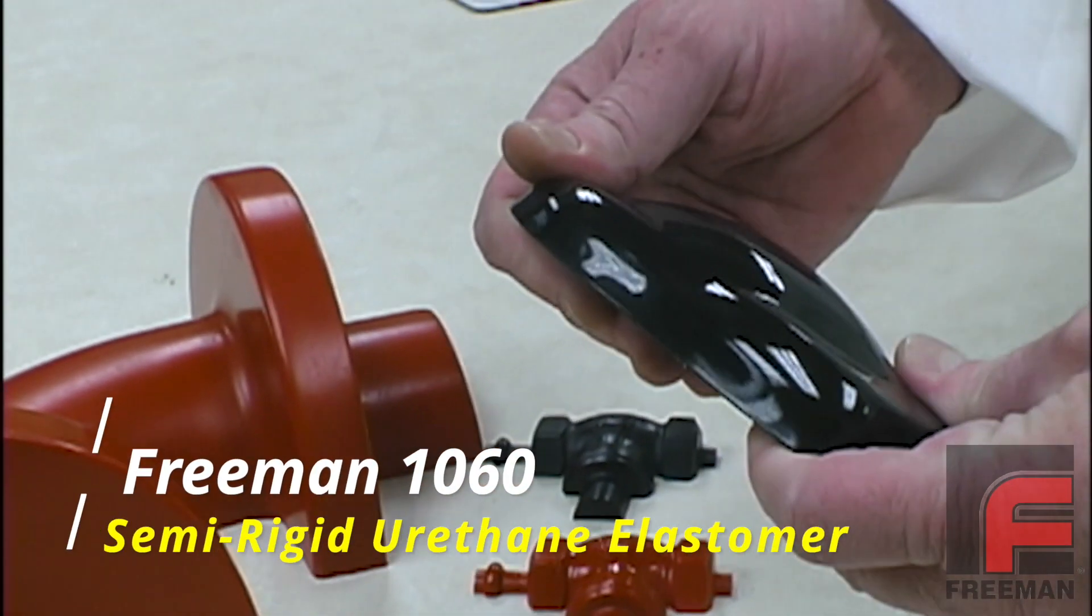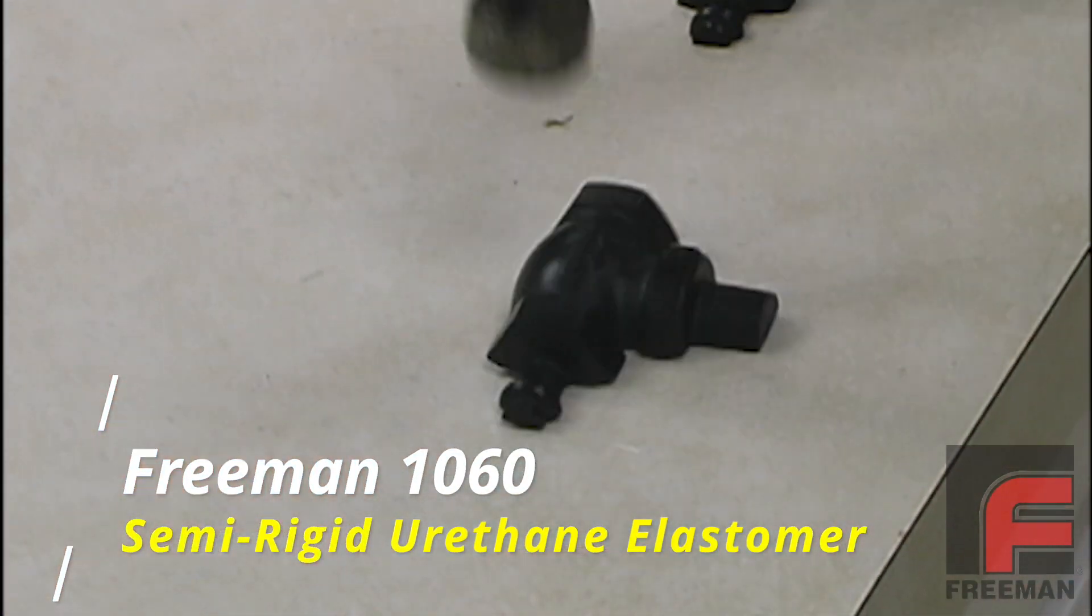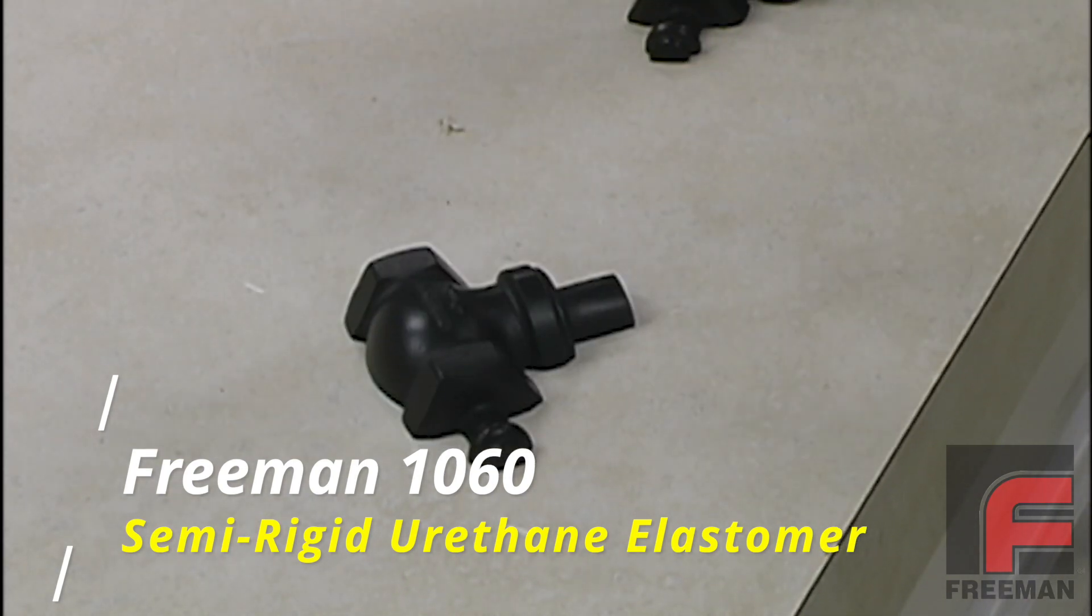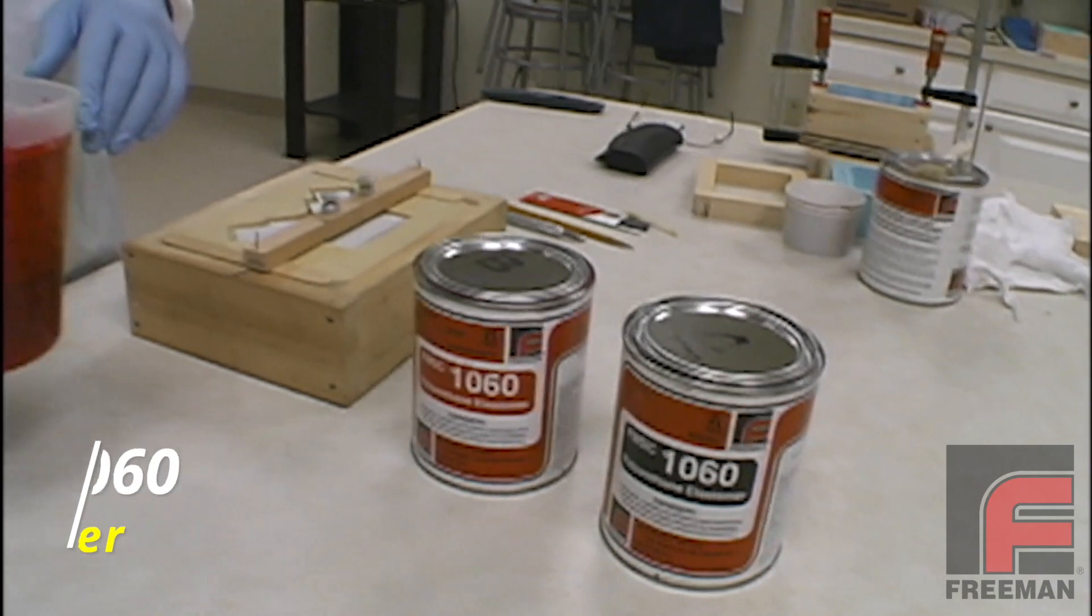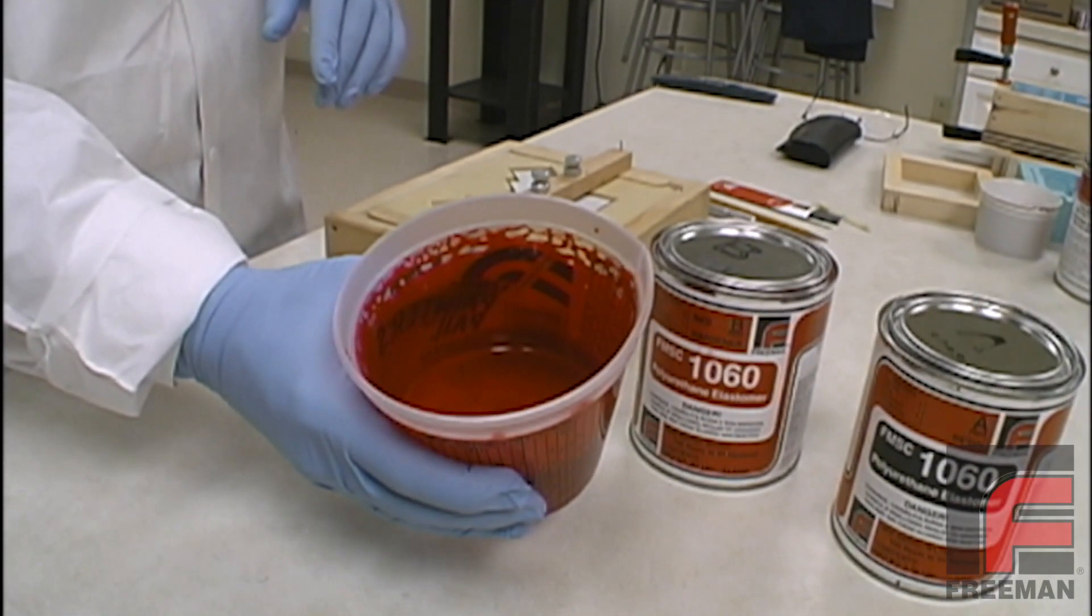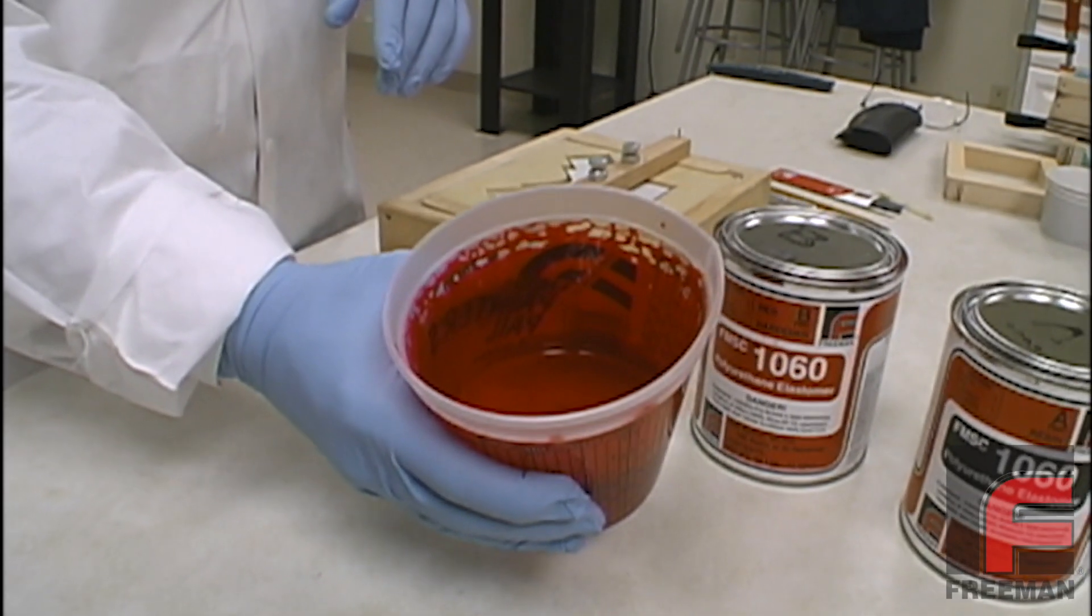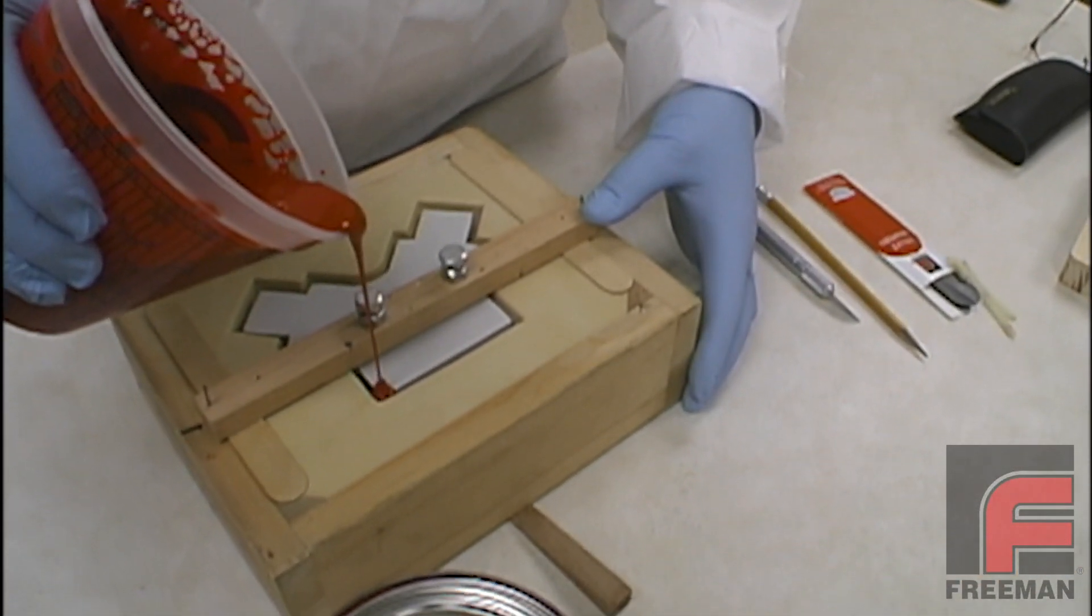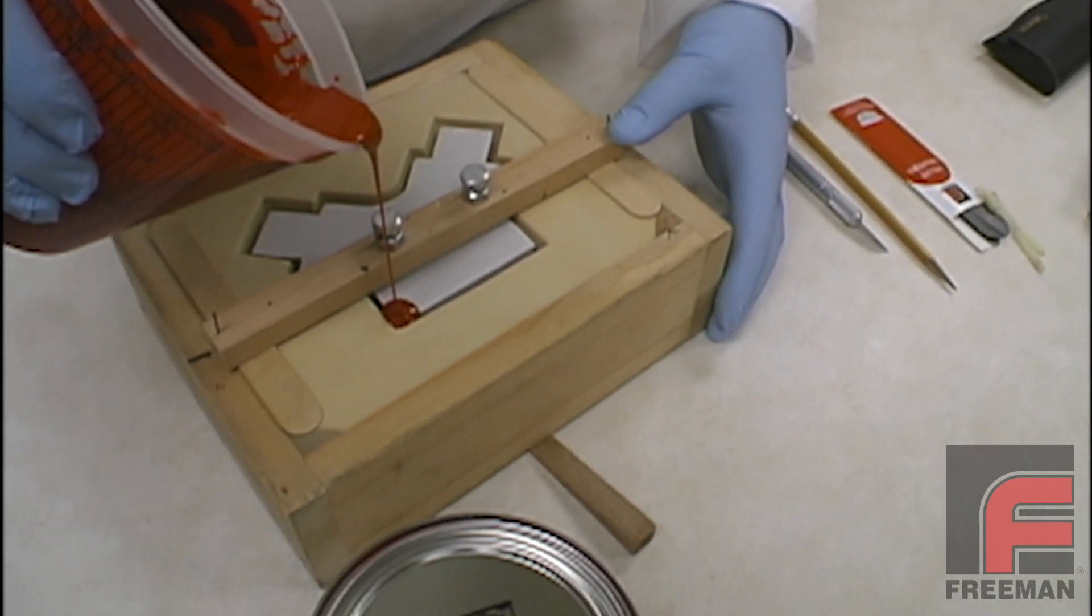We have selected Freeman 1060 Polyurethane Elastomer for our surface casting material. This product, which is commonly used for foundry patterns, features superior abrasion resistance and impact resistance. Available in either red or black, this is what the red Freeman 1060 looks like when completely mixed. Although not a requirement for using the 1060, vacuum degassing is suggested for optimal results.